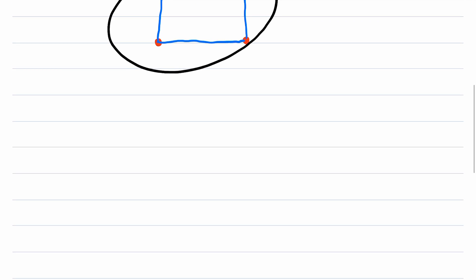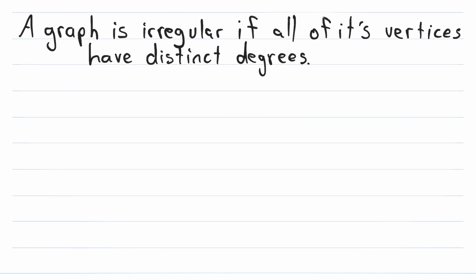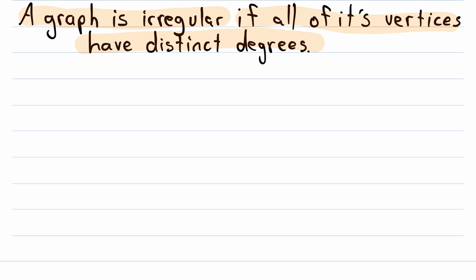With that definition in mind, it would seem natural to define irregular graphs like this: A graph is irregular if all of its vertices have distinct degrees, or equivalently, a graph is irregular if none of its vertices have the same degree. So what's an example of an irregular graph? Well here's one, this graph here, with just one vertex and no edges.